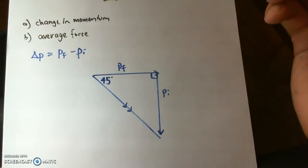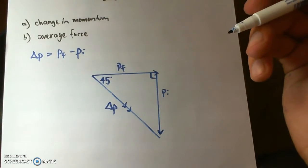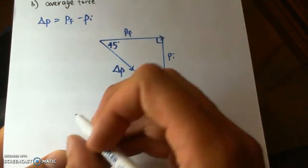This angle is 45 degrees. Now we can actually work out this change in momentum now. So first let's work out the final momentum.